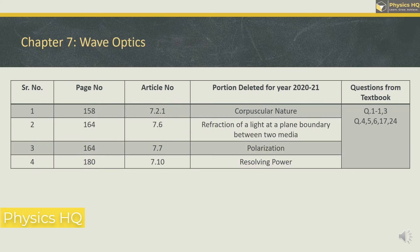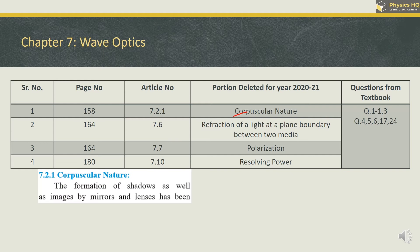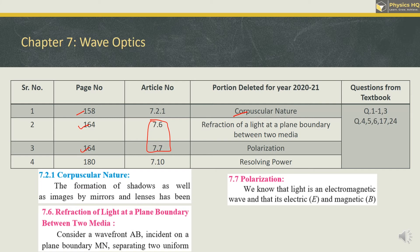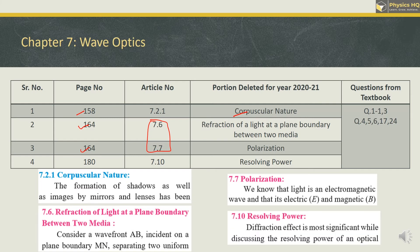In Wave Optics, the corpuscular theory on page number 158 is deleted. Sections 7.6 and 7.7 — two phenomena of light, refraction and polarization — are deleted. Along with that, resolving power is also deleted. These are the things you can avoid for your board exam. For questions, first and third MCQ, and question numbers 4, 5, 6, 17, and 24 can be skipped.